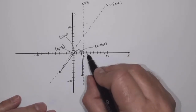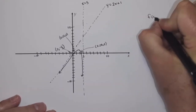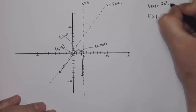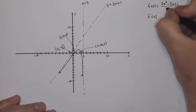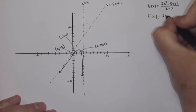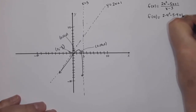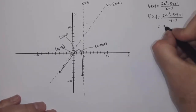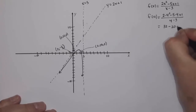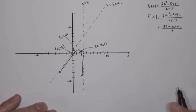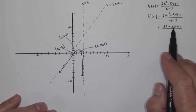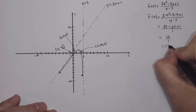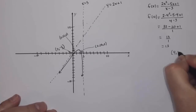If I substitute in x equals 4, which is to the right of my vertical asymptote, I want to find f of 4. Our equation is f of x equals 2x squared minus 5x plus 1 over x minus 3. So f of 4 equals 2 times 4 squared minus 5 times 4 plus 1, over 4 minus 3. That gives 32 minus 20 plus 1, over 1, which equals 13. So I have the point 4 comma 13 on this graph, which means the right branch is up in that area.